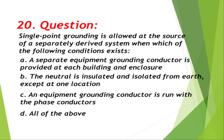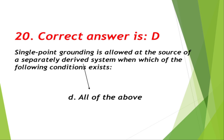Question number 20: Single-point grounding is allowed at the source of a separately derived system when which of the following conditions exist? A. A separate equipment grounding conductor is provided at each building and enclosure, B. The neutral is insulated and isolated from it except at one location, C. An equipment grounding conductor is run with the phase conductors, D. All of the above. Correct answer is D, all of the above.